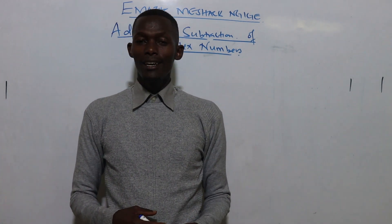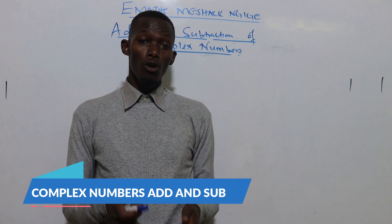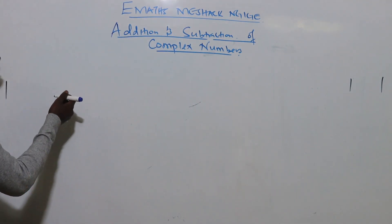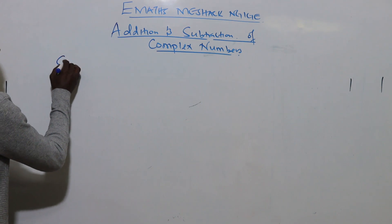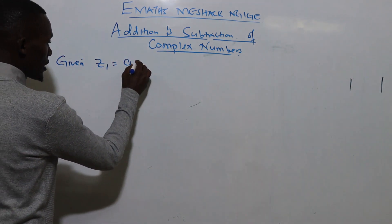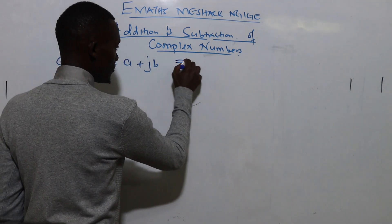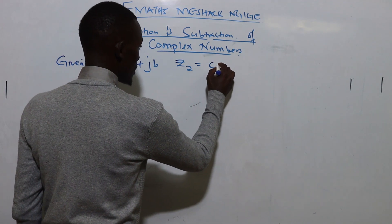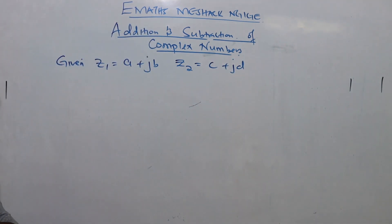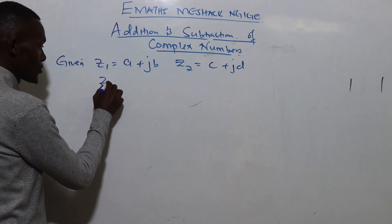Hi guys, welcome again to today's lesson. We're going to be checking addition and subtraction of complex numbers. Given z1 equals a plus jb and z2 equals c plus jd, we have those two complex numbers.